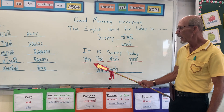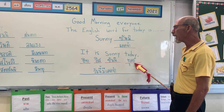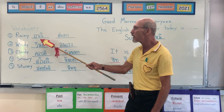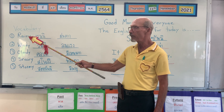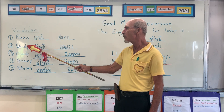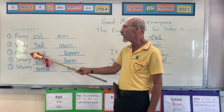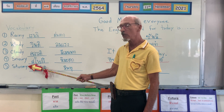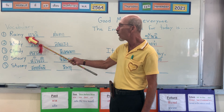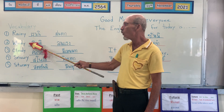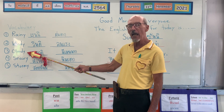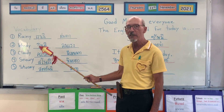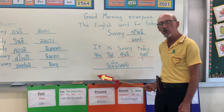The vocabulary that goes with our English word today is weather: rainy, windy, cloudy, snowy, and stormy. Remember, you're supposed to write this down in your notebook so that you can refer back to the words.